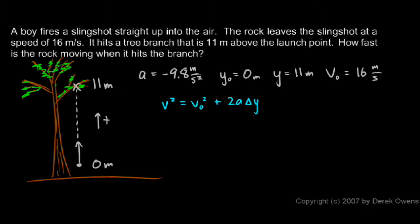Now, I'm trying to find the final velocity. How fast is it moving when it hits the branch? So that's the final speed. That's what I'm trying to find. And I know the initial speed. I know the acceleration. I know the change in y. And, of course, I know 2. So I can just plug those numbers in.